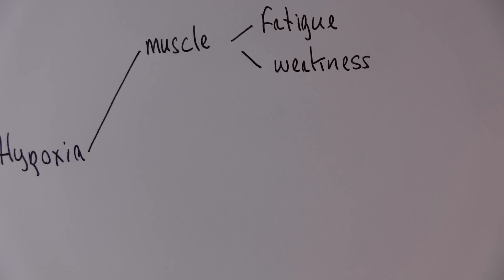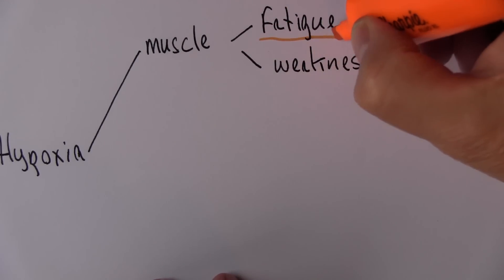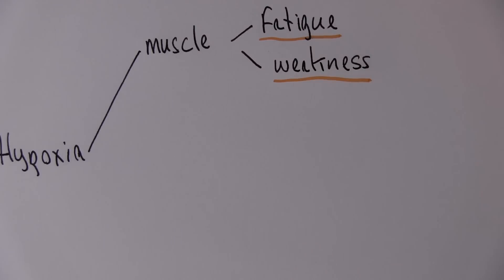People with anemia often complain of muscle weakness and muscle fatigue. So these are the actual clinical features that we can recognize. These are symptoms really. The patient will complain of fatigue and weakness when the anemia is more severe.